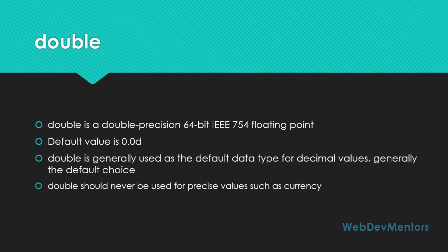Double should never be used for precise values such as currency. When compared to float this is better, but you should not use both float and double for precise values like currencies, percentages, marks, or any calculations requiring a precise answer. There is a separate class in Java that uses math functions to do those decimal value calculations, and I will go through that in another video.